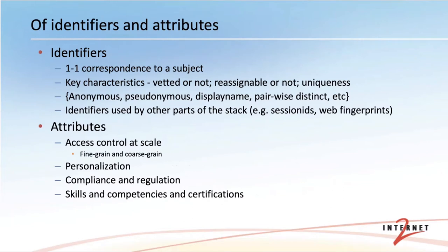Identifiers are a one-to-one correspondence with their subject — that's the key aspect of being an identifier. When you talk about identifiers, we often talk about whether the connection of the identifier to the subject is a well-vetted one, especially in the case of humans. Whether it's reassignable or not — for example, can that email address be reassigned to someone else. And then uniqueness: identifiers are one-to-one, but only within a particular domain.